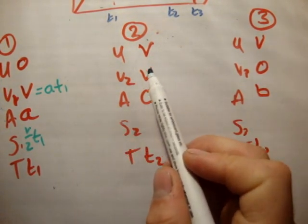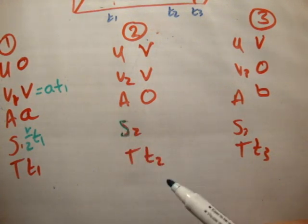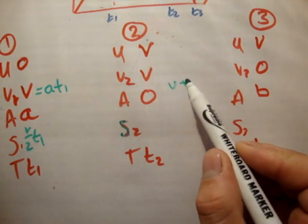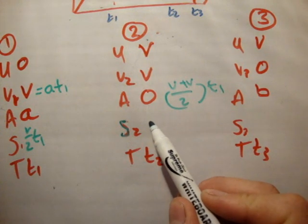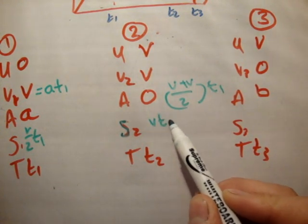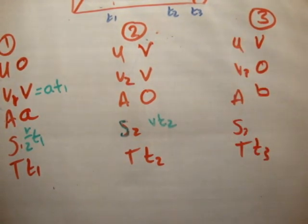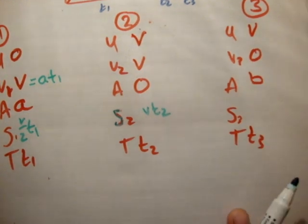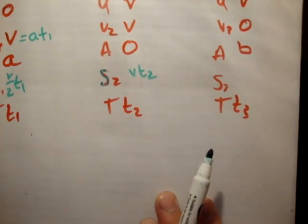Now, we can't get an expression for the speed because there's no acceleration involved. So, s2 is equal to u plus v over 2 times t. So, that's v plus v over 2 times t1. So, that's v times t, or t2. Sorry, that's t2. Like that. And, finally, for region 3, I'm just going to do the calculations down here. Like that.